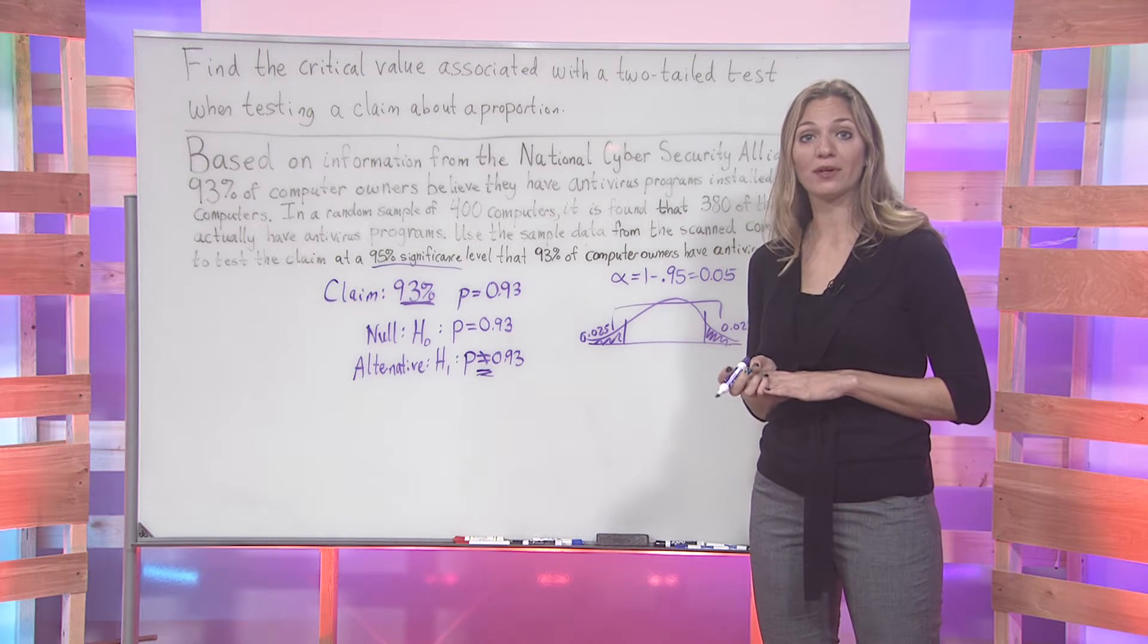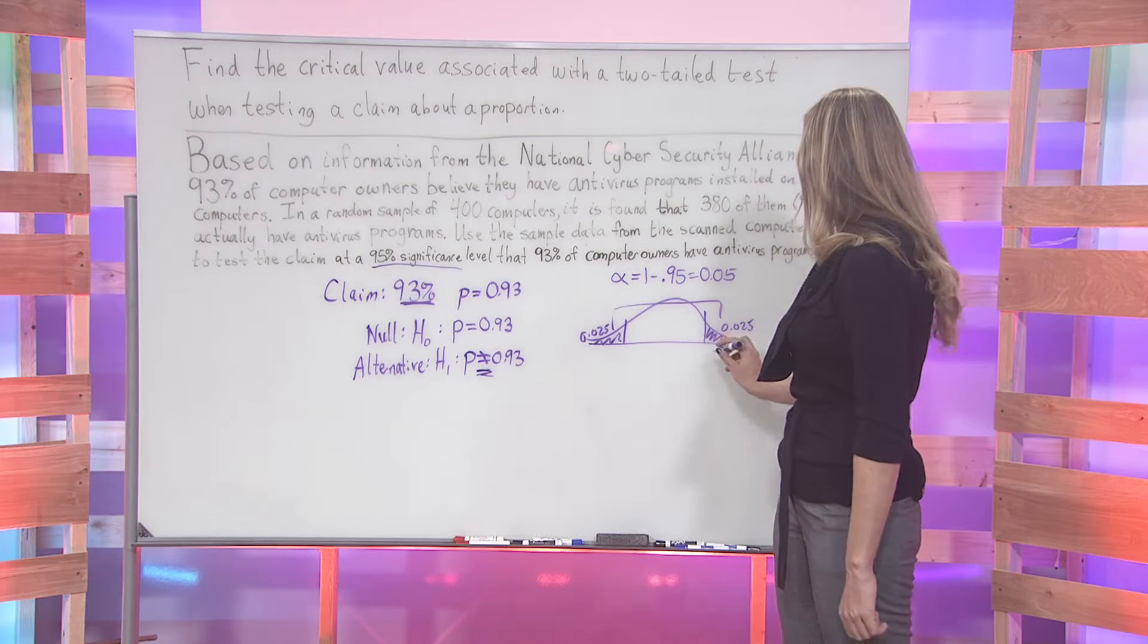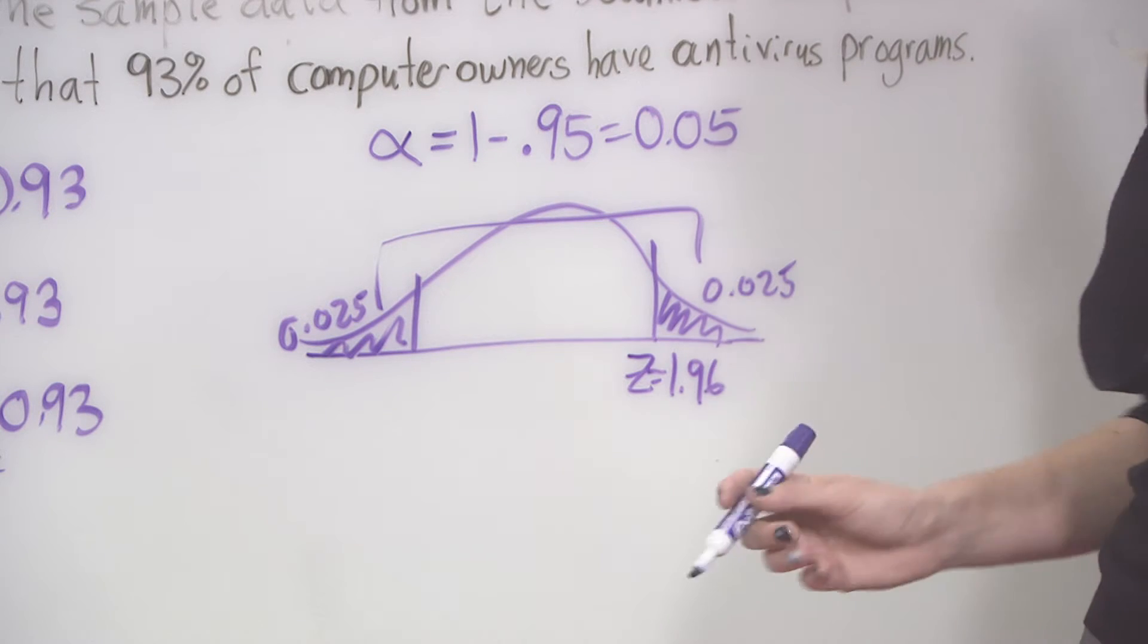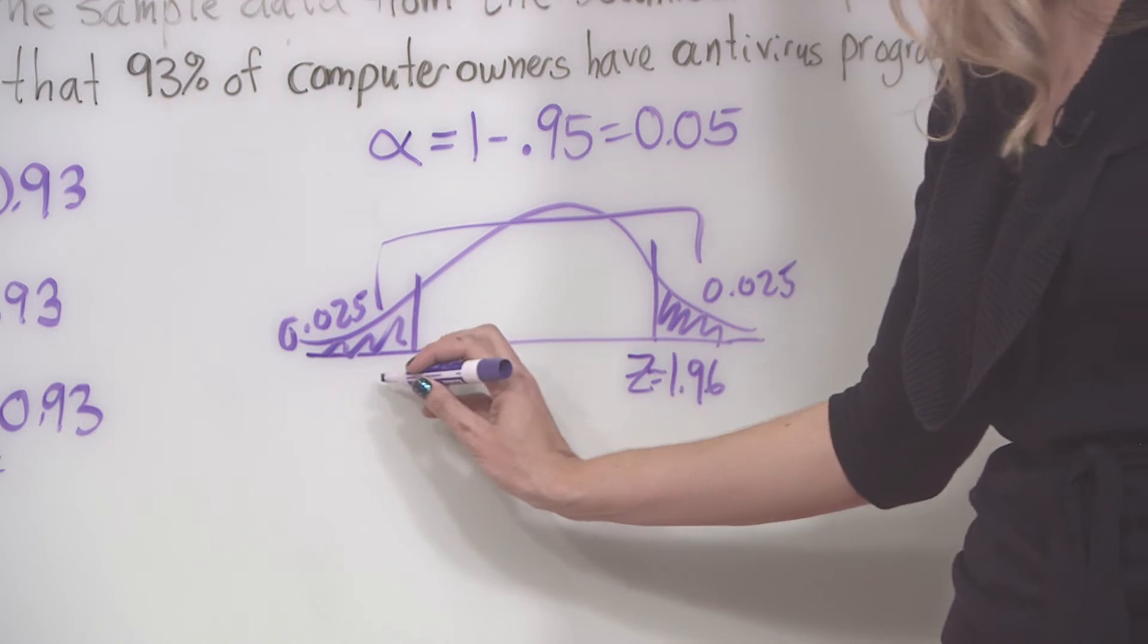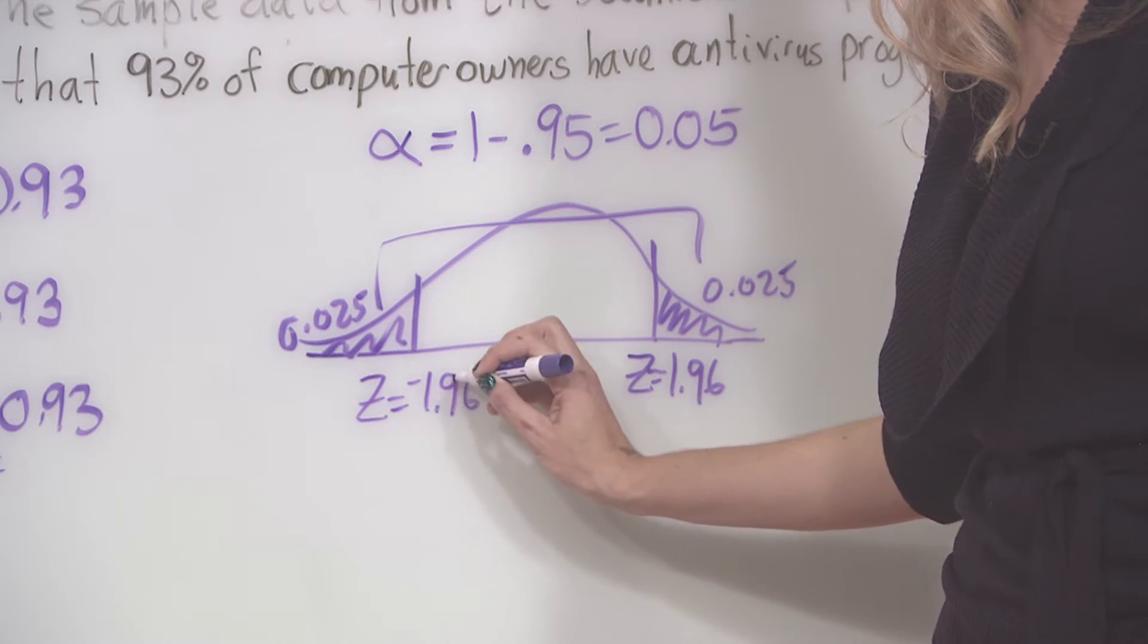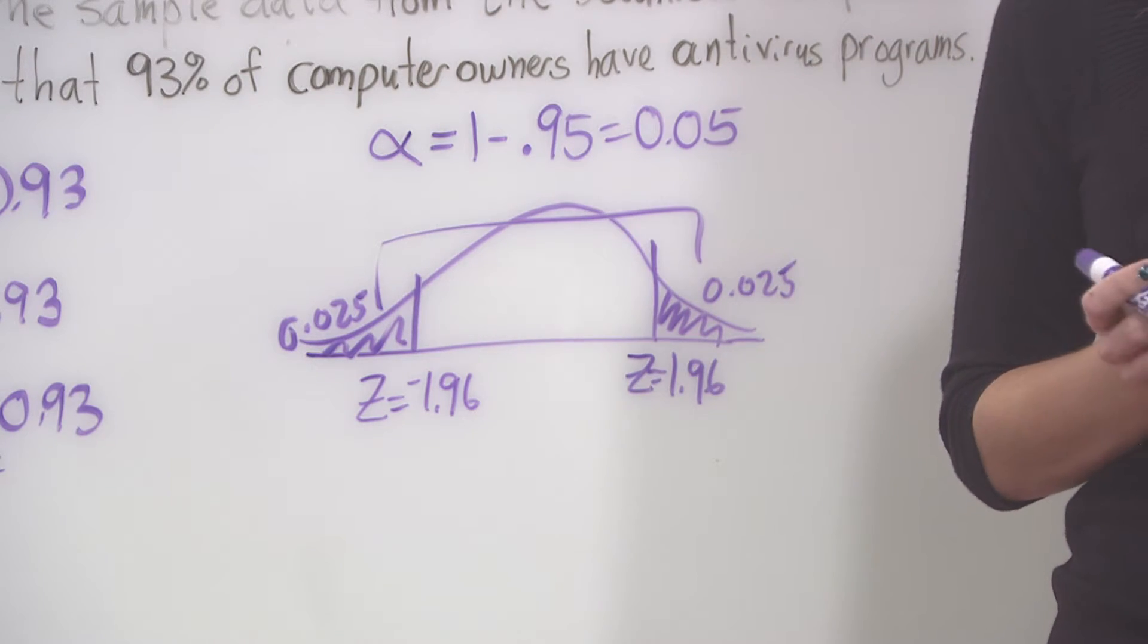The Z will equal 1.96 for our right-hand side and negative 1.96 for the left-hand side.